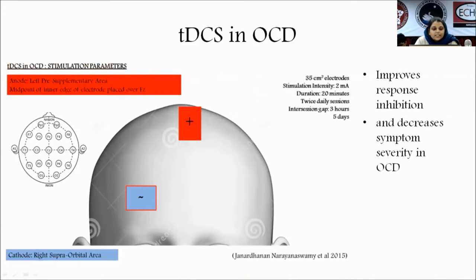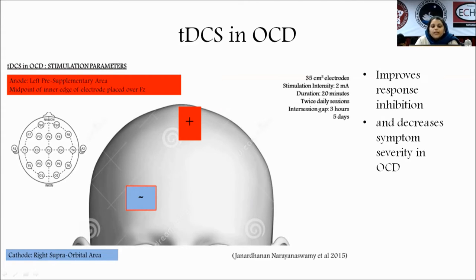For tDCS in OCD: response inhibition is affected in patients with OCD and is an endogenous marker. Improvement in response inhibition is found to correlate with improvement in clinical symptoms, and it serves as a prognostic indicator for symptom improvement in OCD.